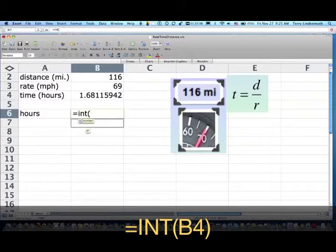Well this function, for positive numbers, you can think of it as just throwing away the part to the right of the decimal. It really rounds down to the integer below it. And so 1.68 would be rounded down to 1. So instead of typing the number in, I'm going to click on the cell and close my parentheses.